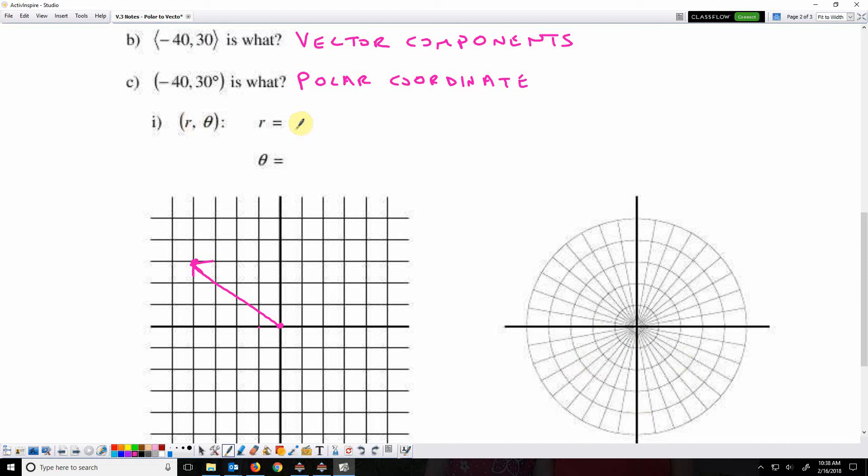And it represents, for the vector, the magnitude. So we're in the form r theta, where r is the magnitude, and theta, the number of degrees, is the direction.